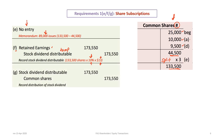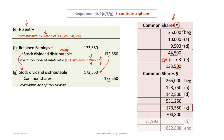Once the stock dividend is distributed, we debit the stock dividend distributable account and credit common shares. Working through the share value tracking: the initial 25,000 shares had a book value of $265,000; the 10,000 lump sum shares added $23,750; and the 9,500 subscription shares at $15 added $142,500, giving a total common share value of $539,250 before the stock dividend. After adding the stock dividend, the balance in the account becomes $704,800.